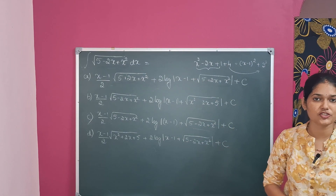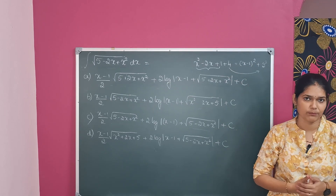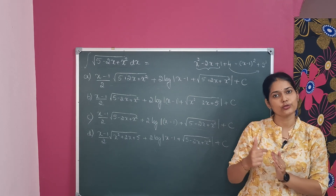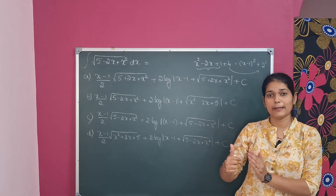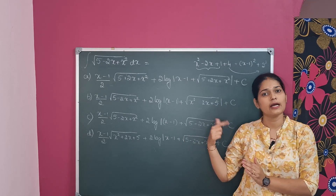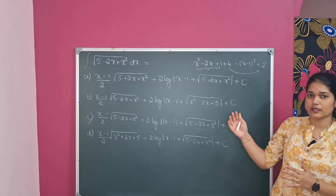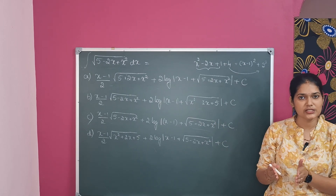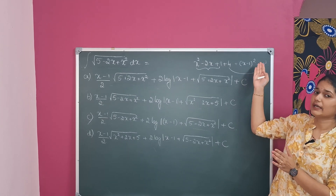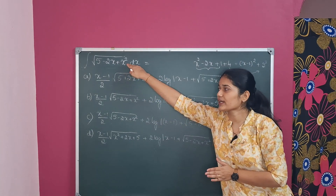Therefore, the given function is reduced to the root of x square plus a square form. We know the integral of root of x square plus a square is x by 2 times root of x square plus a square, plus a square by 2 times log of mod(x plus root(x square plus a square)) plus c. Now, root of x square plus a square is nothing but 5 minus 2x plus x square.